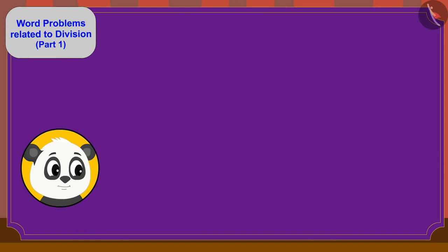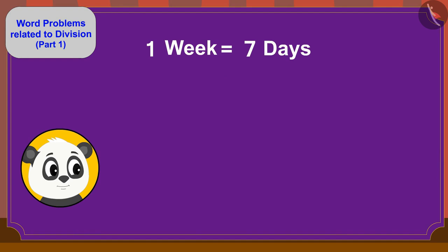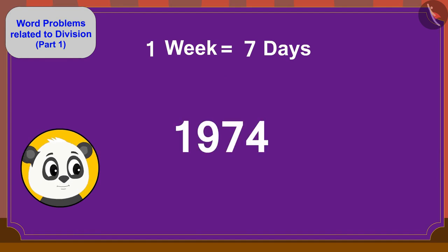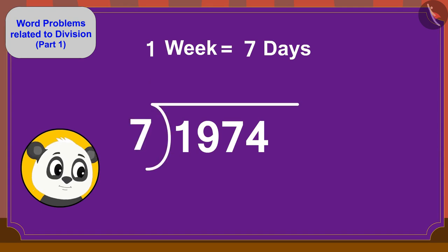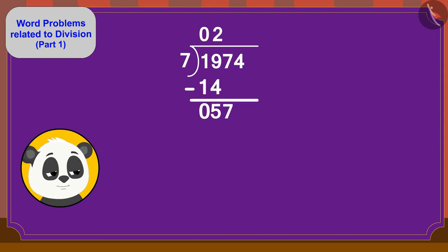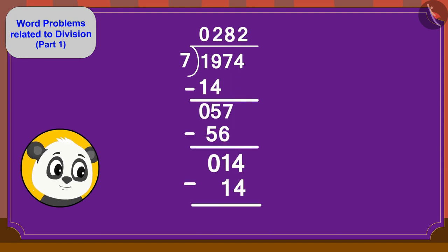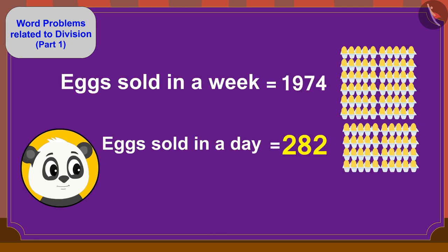Yes! There are 7 days in a week. Therefore, to find the solution to this question, we have to divide 1974 by 7. We can find the answer in this way. Golu will have to sell 282 eggs a day.